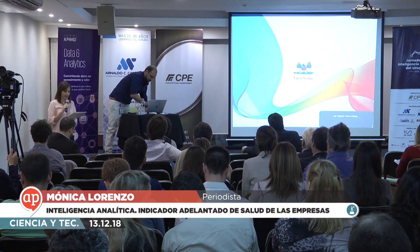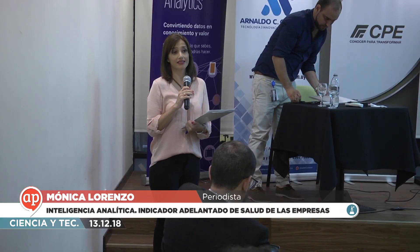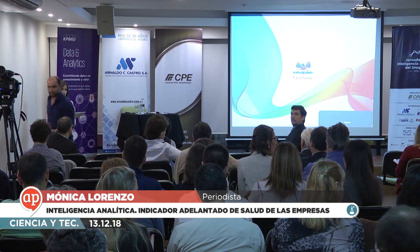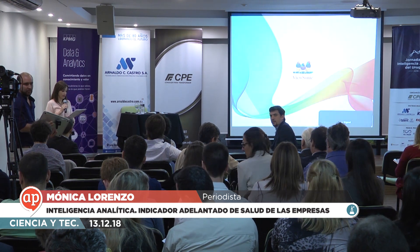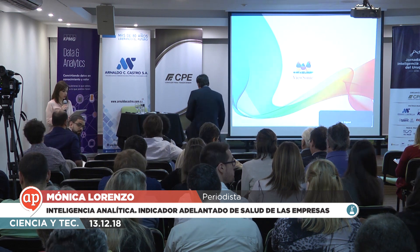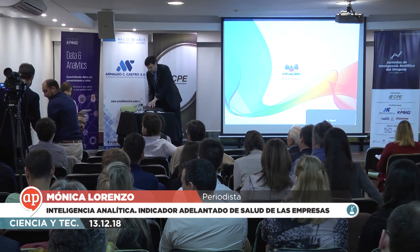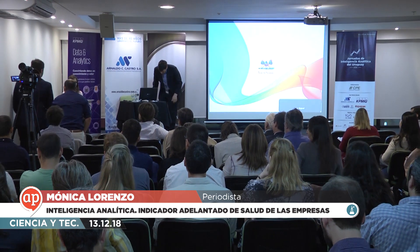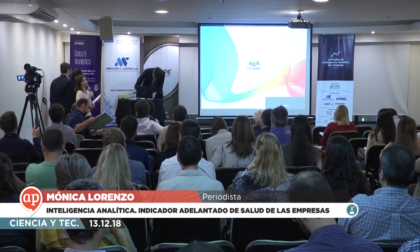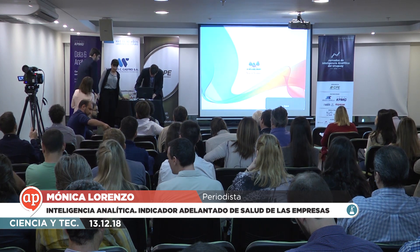Continuamos con las charlas. En este caso vamos a presentar a tres estudiantes del instituto. Ellos van a hablar acerca del indicador adelantado de salud de las empresas. Por eso invitamos a Coniglio, Saibene y Puente. Ellos son los tres estudiantes del instituto CPE que hicieron un modelo predictivo para determinar qué empresas iban a quebrar en un año. Son el grupo que aprobó con la mejor nota, y es por eso que hacen esta exposición hoy con una nota de un 98%.